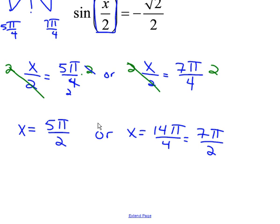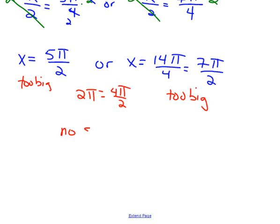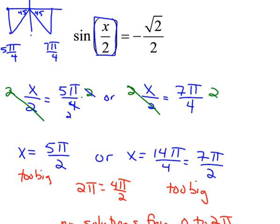And let's check out these answers to see if they are between 0 and 2 pi. We said in pi over 2's, 2 pi is 4 pi over 2. So 5 pi over 2 is too big. And 7 pi over 2 is also too big. And so in this case, we're going to say we have no solutions from 0 to 2 pi. That doesn't mean there aren't any solutions for this equation in general. There's just none on our right interval.